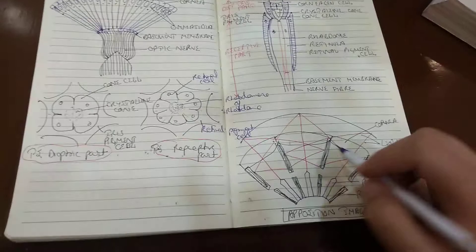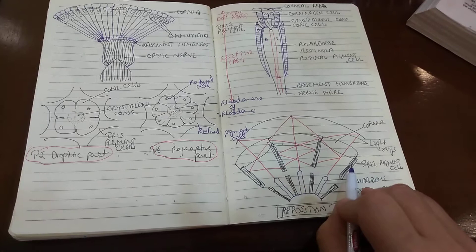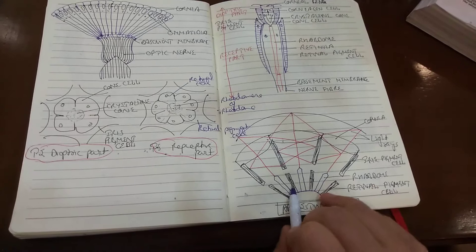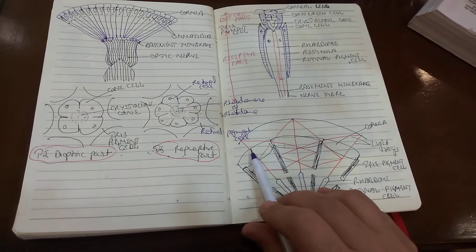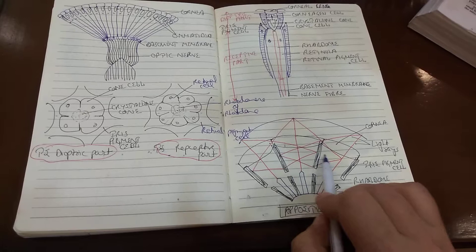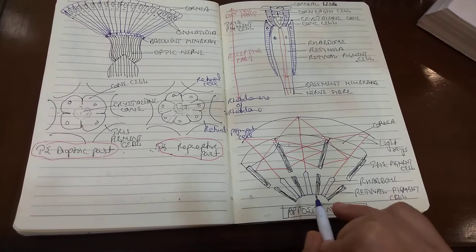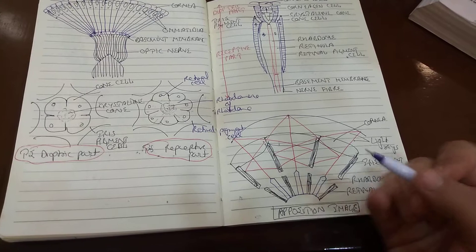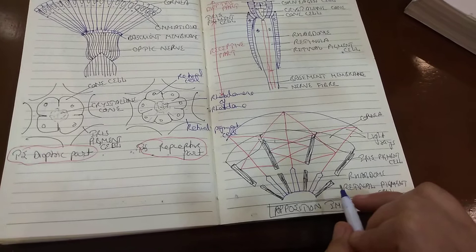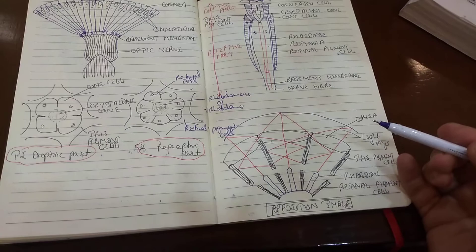In the opposition image, when light is very bright, the iris pigment cells and retinal pigment cells cover the rhabdom. As a result, only light parallel to the rhabdom enters it; all other oblique light is absorbed by the pigments. The image is formed by several points of light lying side by side, one in each omatidium. Such an image is called an opposition or mosaic image, and the eye is referred to as the mosaic eye.